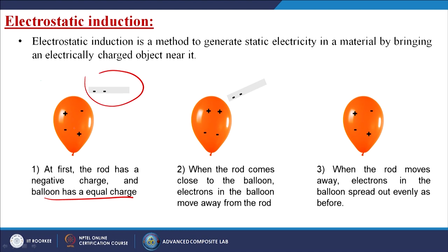When I take out the rod, the plus and minus charges are equally distributed. When I bring the negatively charged rod close to the balloon, all the positive ions move towards it. But when I take the rod away, automatically the charges are equally distributed in the system again. This means that by bringing any charged material close to a particular material, the opposite ions will be attracted by that material itself.